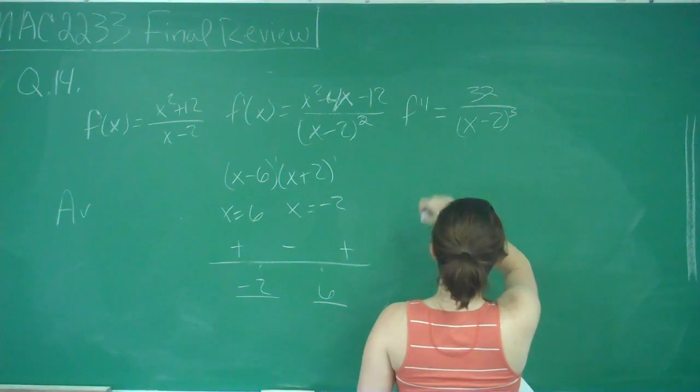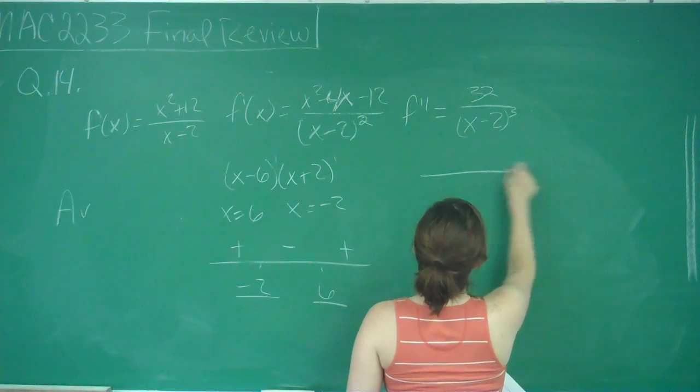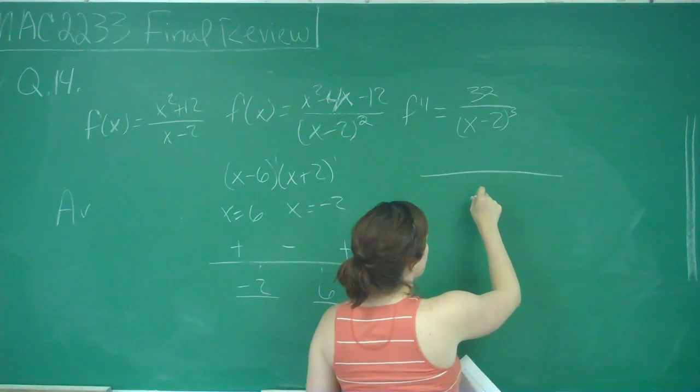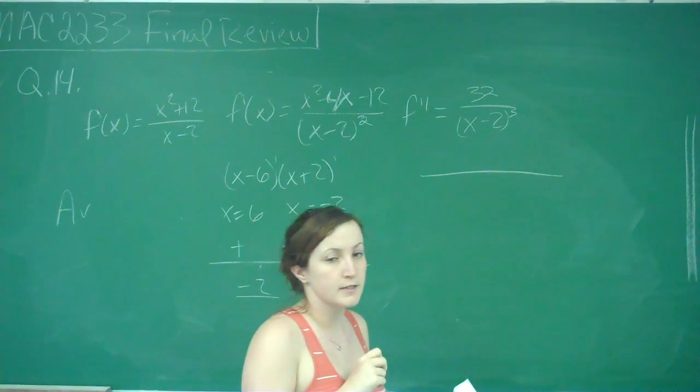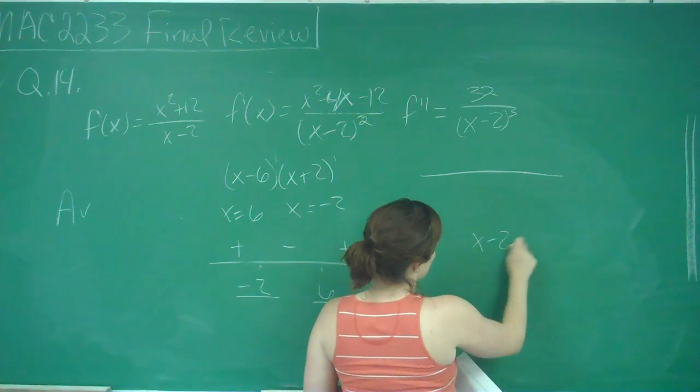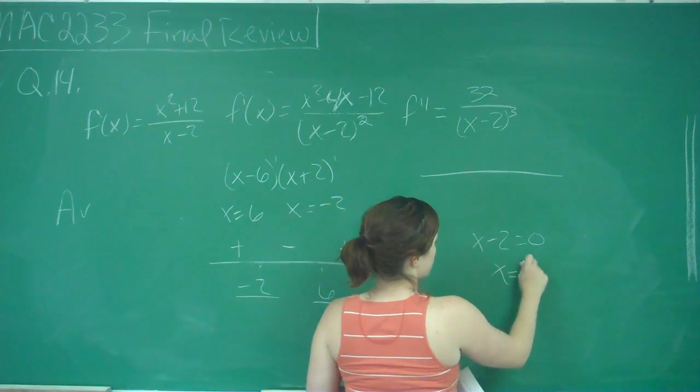Let's look at our double prime. So the only possible critical number we have is when we set the denominator equal to 0 in this case. So we get x minus 2 equal to 0, so x equals 2.